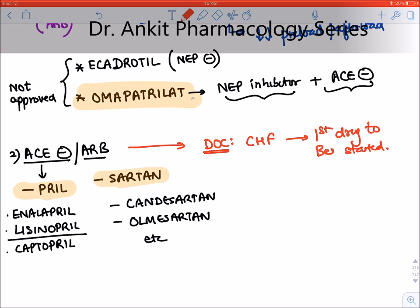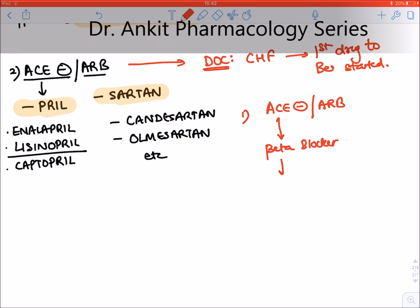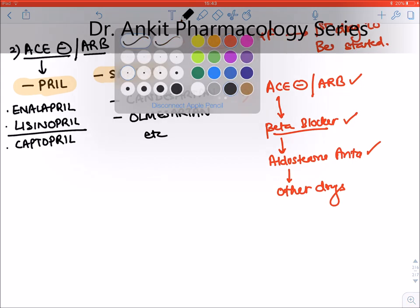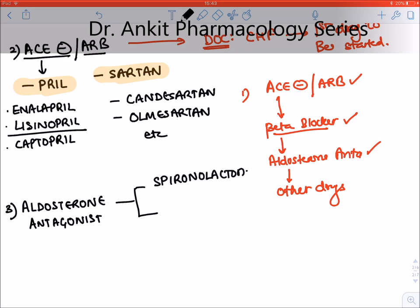If a patient of heart failure comes in, we first start an ACE inhibitor. If the patient cannot tolerate it, we start an ARB. The second drug we add is a beta-blocker. The third drug we add is an aldosterone antagonist. Then we add other drugs. So the sequence is: ACE inhibitor/ARB → beta-blocker → aldosterone antagonist → other drugs.